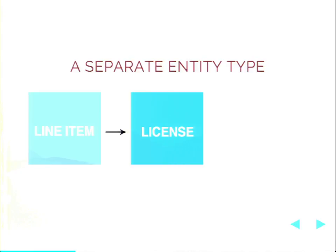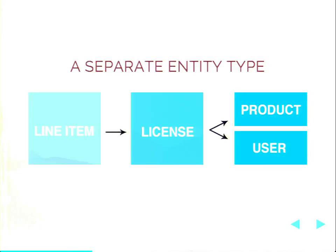We work from our line item that we create in our original checkout. As we add a product that's got the subscription or service to it, we create a license — this is the entity storing all of our information. It references the original product that was added to the cart and the user that has access to the license. The license then has all of the field information, so we can add fields, just a fieldable entity, to refer to the product sold on the third-party service, the access level, the API key, or any piece of information for their license.